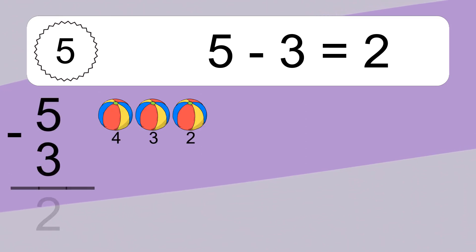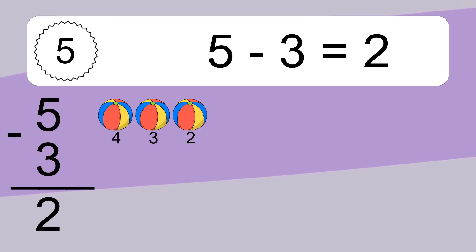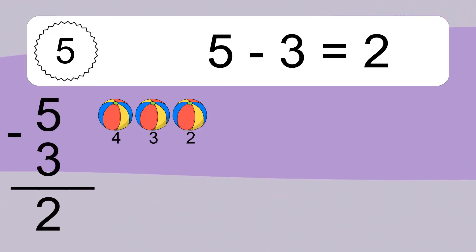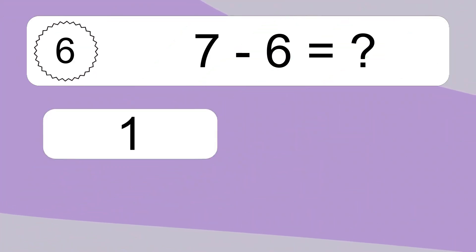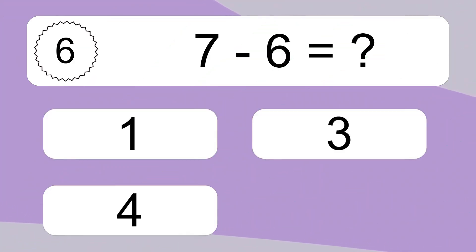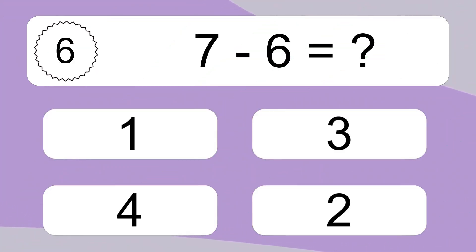5 minus 3 equals what? 5 minus 3 equals 2. Let's count it: 4, 3, 2.